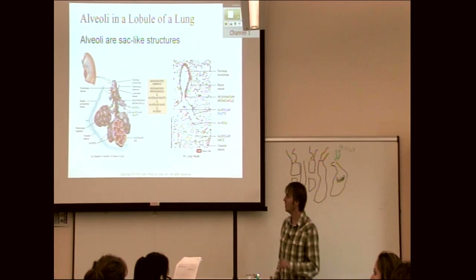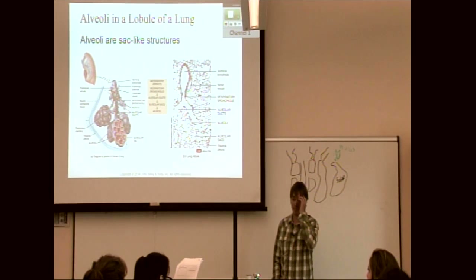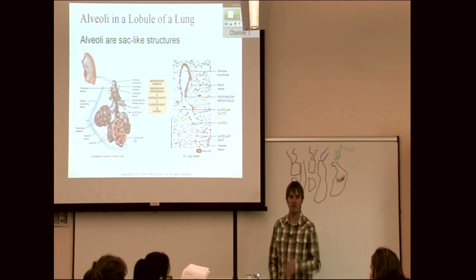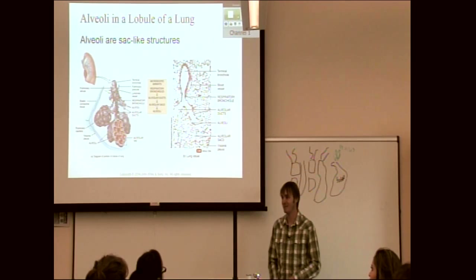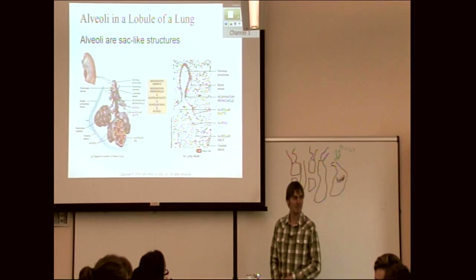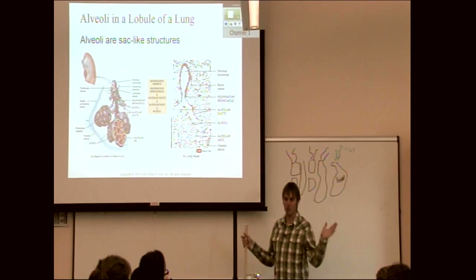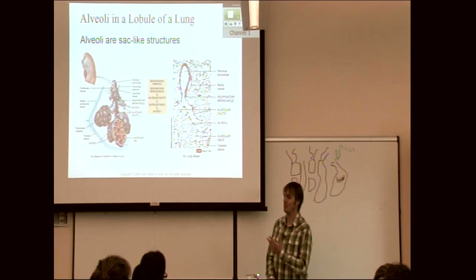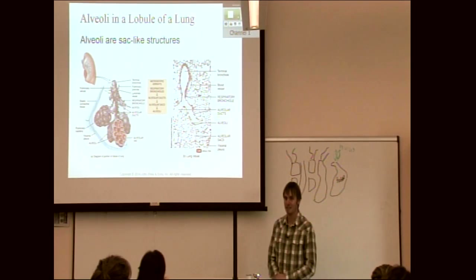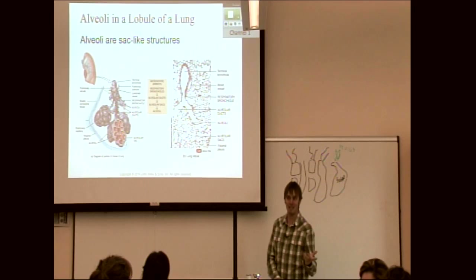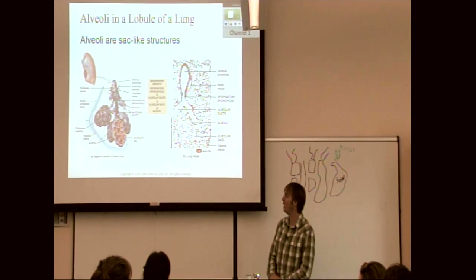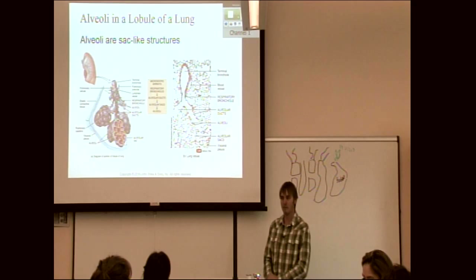The total surface area of your lungs is bigger than this room — if you took all those little alveolar grapes and spread them out on the floor you'd have multiple rooms' worth. That's because diffusion isn't that efficient, and we use a lot of oxygen, so we need a very large surface area for gas exchange to happen.